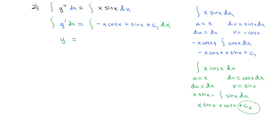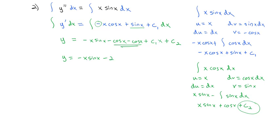Let's do this term by term. Distributing the negative through, we have negative x sine x minus cosine of x. Then we take the antiderivative of sine x, which is negative cosine x, plus the antiderivative of c1, which is c1 times x. And of course we need that plus a constant at the end, plus c2. Combining like terms, y is equal to negative x sine x minus 2 cosine x, plus c1 times x, plus c2.